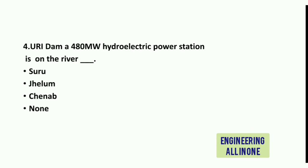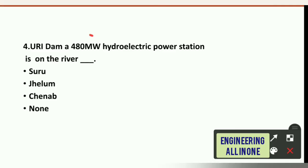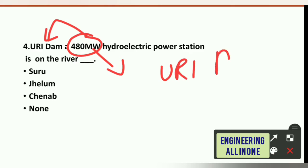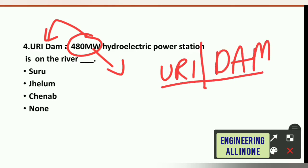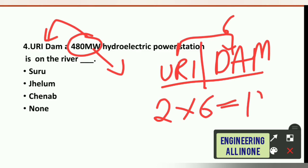Question 4: Uri dam is a 480 megawatt hydroelectric power station. To remember the capacity, we can divide 'Uri dam' into two syllables: 'Uri' and 'dam' — total 6 alphabets. 2 multiplied by 6 equals 12. Then 4+8+0 equals 480 megawatt. This trick gives you a clue to remember the capacity.